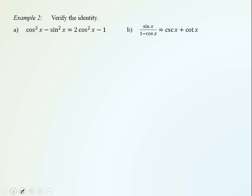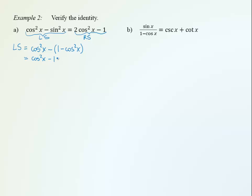Now let's verify some true identities. Starting with the left side, we have cos²x minus sin²x. Using the Pythagorean identity, we replace sin²x with 1 minus cos²x. This gives cos²x minus (1 minus cos²x), which equals cos²x minus 1 plus cos²x, which simplifies to 2cos²x minus 1 — the right side. Identity proven.